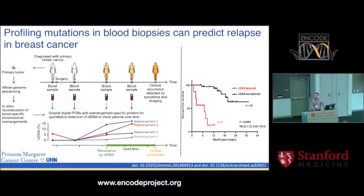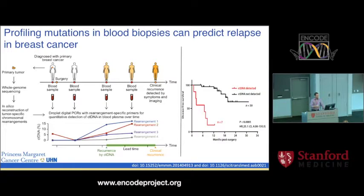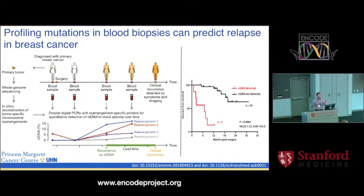Circulating tumor DNA can be assessed for mutations, if you know which mutations to look for, in order to monitor whether the tumor is highly abundant, whether there's a recurrence coming. There's already a lot of work done in breast cancer looking at the effectiveness of monitoring mutations in the blood to trace disease progression. One study took tumors from patients, sequenced them to identify specific mutations, then took blood samples before and after surgery. As shown in the bottom left panel, rearrangement number one is picked up in the blood significantly earlier than clinical recurrence — an average of 11 months earlier as reported in that publication.